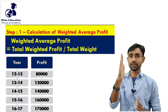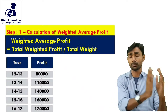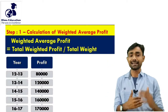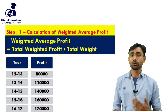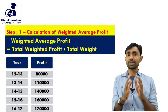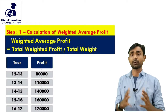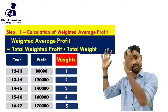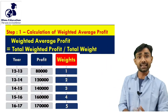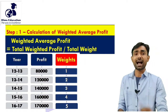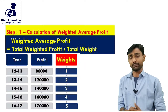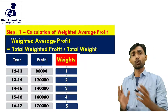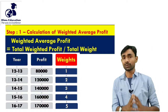Here the table has: first column — year, from 2012-13 up to 2016-17; second column — profit for each year respectively: 80,000; 1,20,000; 1,40,000; 1,60,000; and 1,70,000. The next column is weight. As we learned, the earliest year gets the least weight and the most recent year — 2016-17 — gets the highest weight. So we allot weights 1 through 5: year one gets weight 1, year two gets 2, three gets 3, four gets 4, and five gets 5.